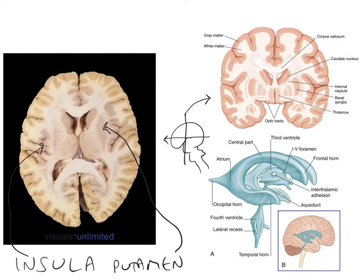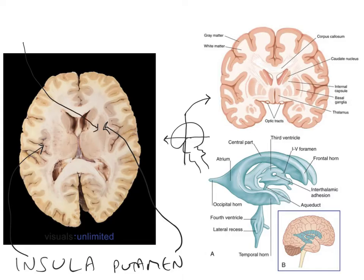Sitting just deep to the putamen, and not very obviously differentiable in this image, is another region: the globus pallidus. We can see the globus pallidus on the coronal section quite easily here, mainly because this is a diagrammatic representation — in the real brain it's harder to see, but at higher magnification you might just be able to differentiate it. The globus pallidus is another part of the deep grey matter and one of the basal ganglia.